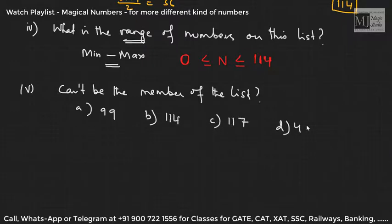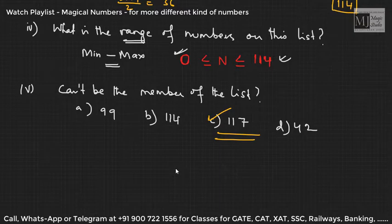We know that our range is 0 to 114. Zero can be on this list, 114 can be on this list, but anything above that can't be a member of the list. The correct answer is 117. I hope you have enjoyed these whole numbers. Thank you.